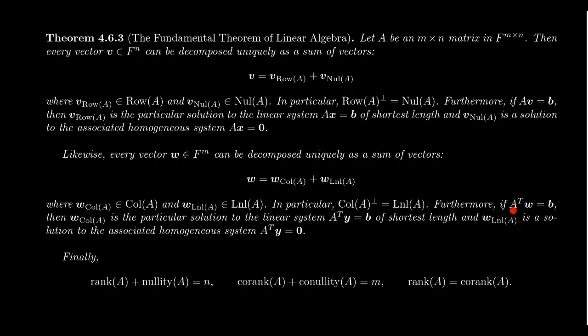And if we look at any equation A^T·W equals B, then W-column will be a particular solution of the system A^T·Y equals B of shortest length again. And the vector W-left-null will be a solution to the homogeneous system A^T·Y equals zero.